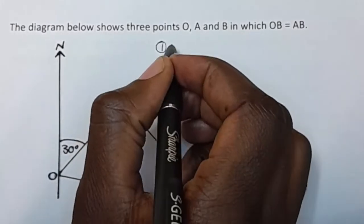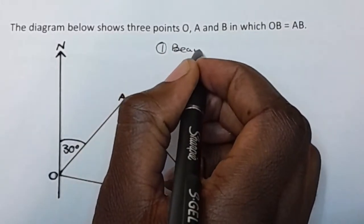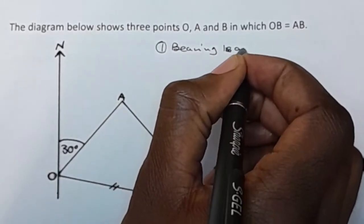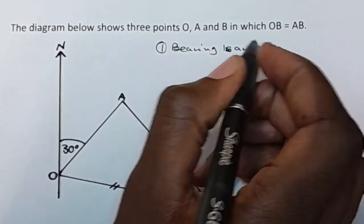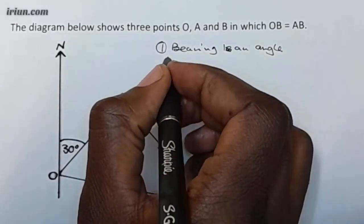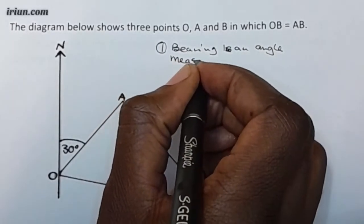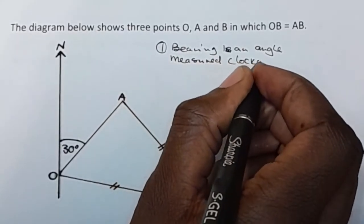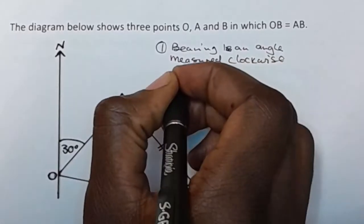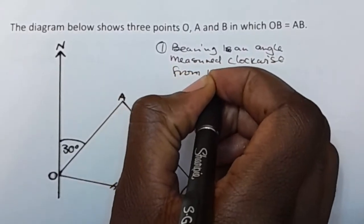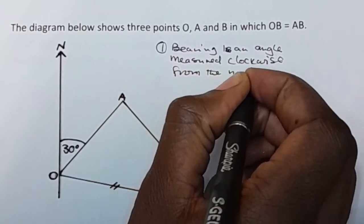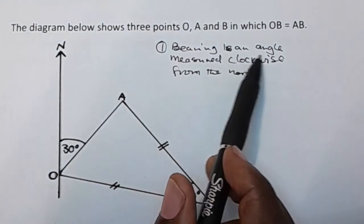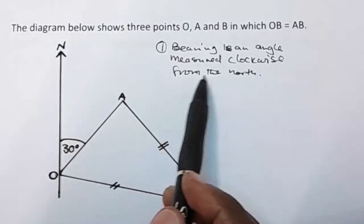So, what is a bearing? Bearing is an angle measured clockwise from the north. This is very important: bearing is an angle measured clockwise from the north.